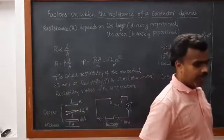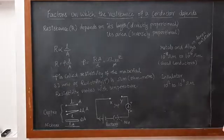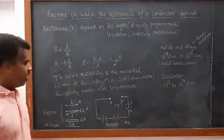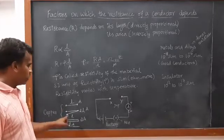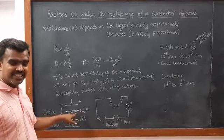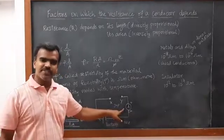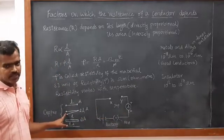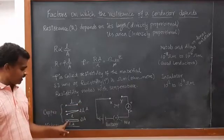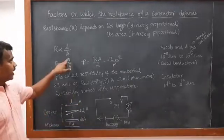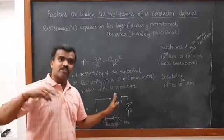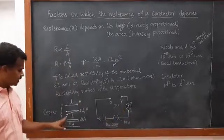Now, which case will have high resistance and which will have low resistance? In the copper cases, the second case — with 2L — will have the greatest resistance, because R is directly proportional to L. Length increases means resistance increases, so the least current flows in case two. The third case, with doubled area, will give more current because area increases means resistance decreases, allowing current to pass easily.